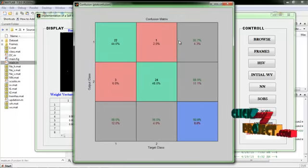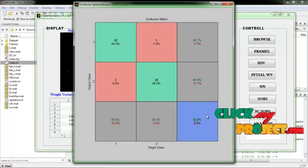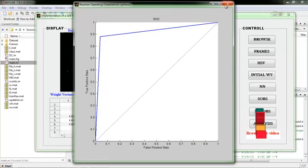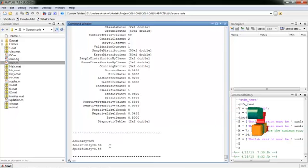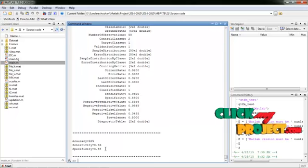Now our classifier will be getting the 92% accuracy rate. And it will be shown in the ROC curve also. Now it is the accuracy of the classifier is 92%, sensitivity of the classifier is 0.96%, and specificity of the classifier is 0.88%.